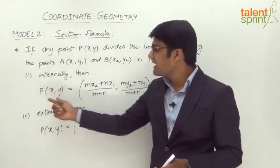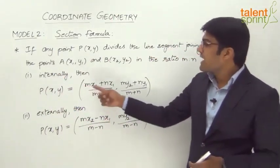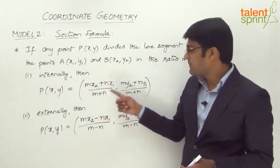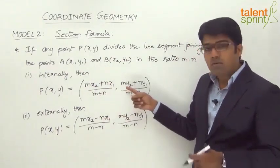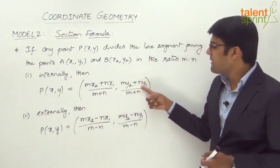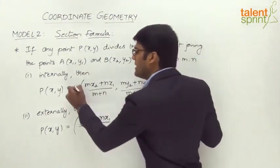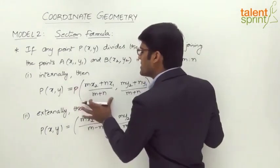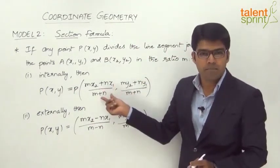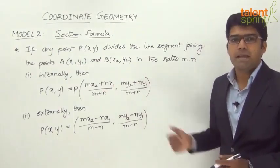The point P can be calculated as P(x, y) equal to (mx2 + nx1) divided by (m + n), and the y-coordinate will be equal to (my2 + ny1) divided by (m + n). So basically the coordinates of point P will be ((mx2 + nx1)/(m + n), (my2 + ny1)/(m + n)).